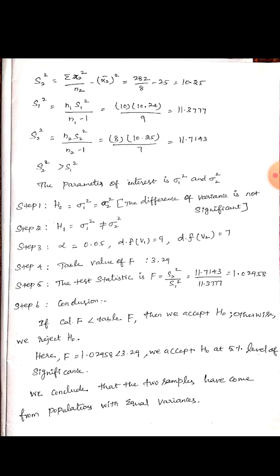Step 1: H0 (null hypothesis) — sigma 1 square equals sigma 2 square, therefore the difference of variance is not significant. H1 (alternate hypothesis) is opposite to the null hypothesis: sigma 1 square is not equal to sigma 2 square.